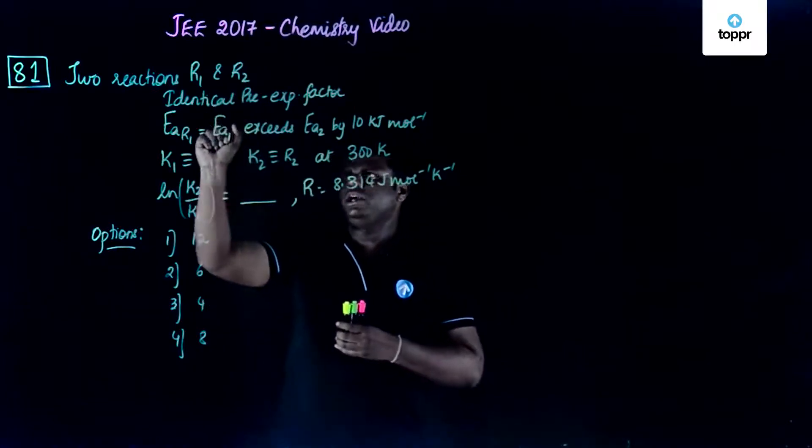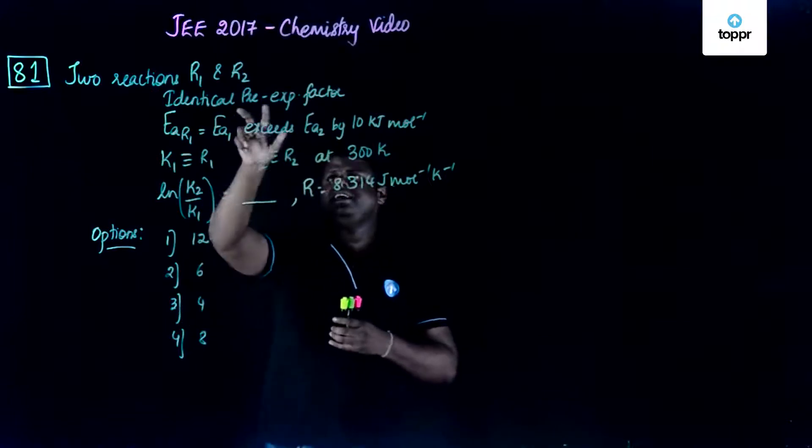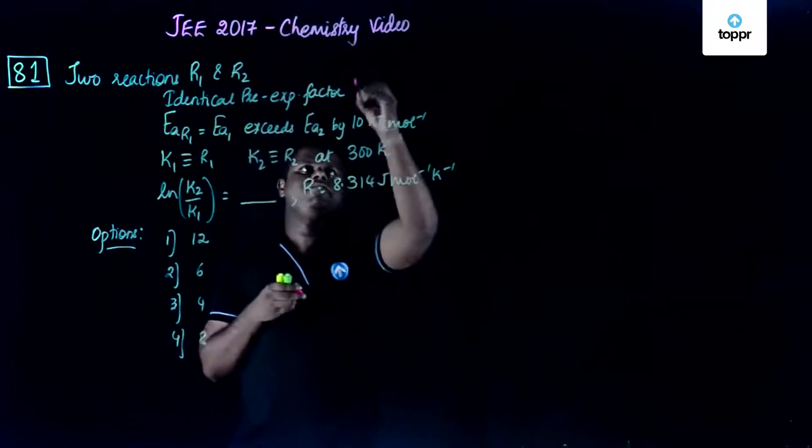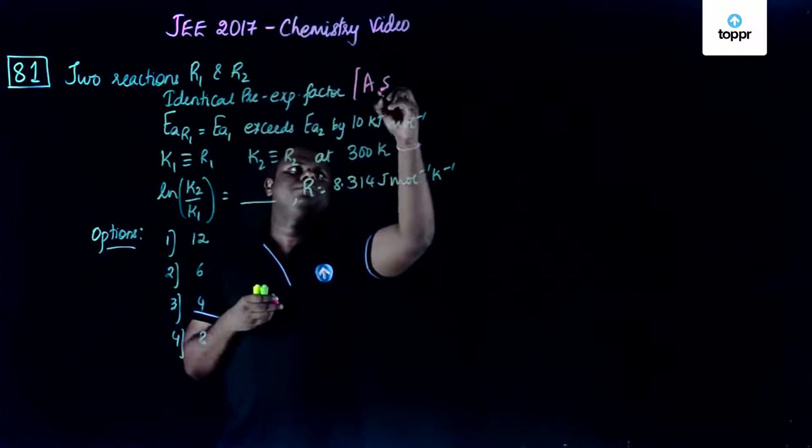There are two reactions R1 and R2. They are identical and have identical pre-exponential factors, meaning the A factor would be the same.